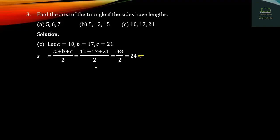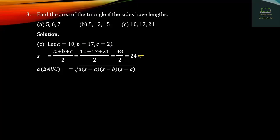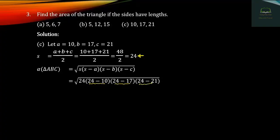Now we have Q2 using Heron's formula: square root of S times (S minus A) times (S minus B) times (S minus C). Here S equals 24, A equals 14, B equals 7, C equals 21, giving us 7 as a factor. So we compute 24, 24 minus 14, 24 minus 7, and 3.